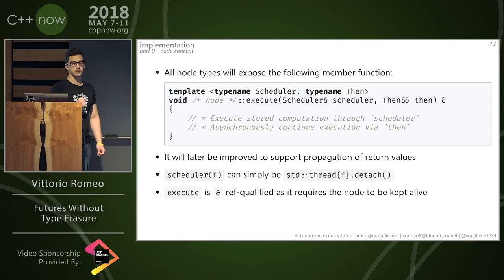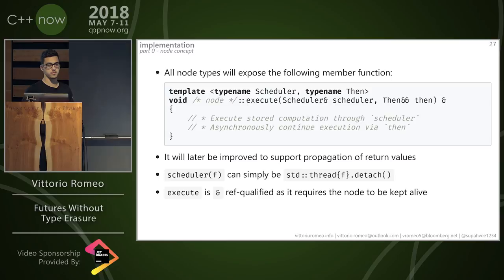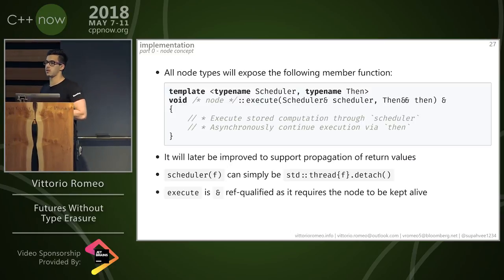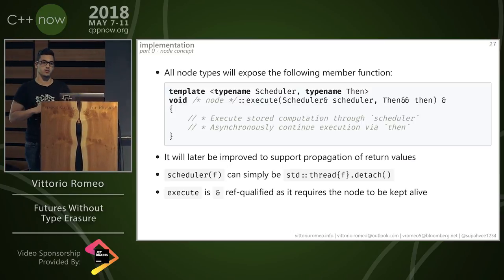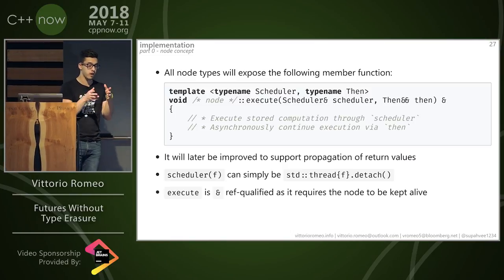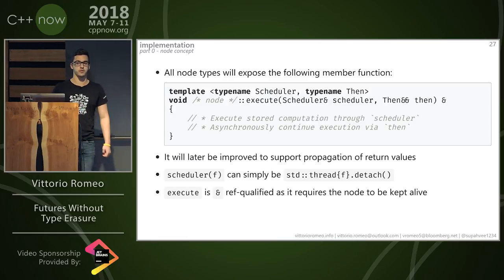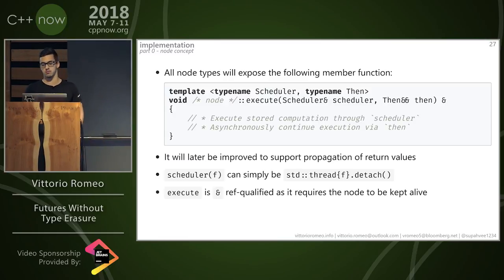A question was raised: since you need to know the whole graph at compile time, this wouldn't be usable for cases where you fetch a set of data and then need to run a future for each element of that runtime-determined array. Correct — if runtime data determines the graph shape, this is not applicable. The idea is to provide syntactic sugar for places where you know you can do things in parallel without having to write it yourself or suffer the overhead of future, which might be unnecessary.